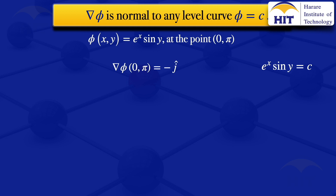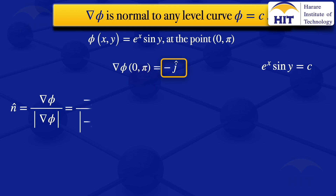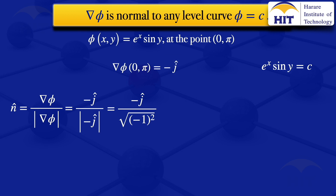What we want to find is the unit normal. To find the unit normal we divide the vector by its norm: unit normal = grad φ / |grad φ|. Our grad φ is −j, so the unit normal is −j divided by |−j|, which is −j divided by √((-1)²) = −j / 1. Therefore the unit normal is −j.